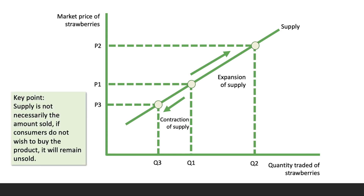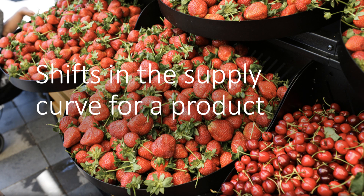A key point worth bearing in mind is that supply is not necessarily the total amount sold — it really just reflects the volume of output of strawberries that goes to the market. If consumers don't wish to buy the product, it will remain unsold. We have to bring supply and demand together to find the equilibrium market price, and we'll do that in the next video.